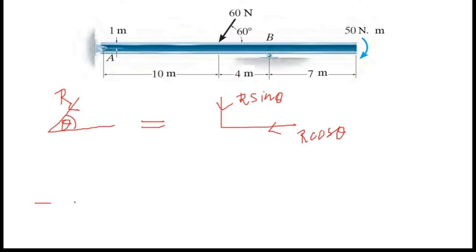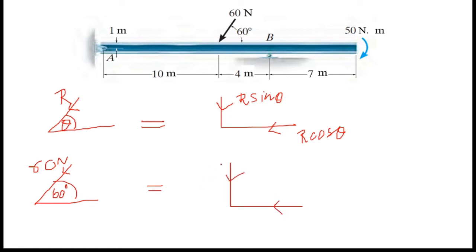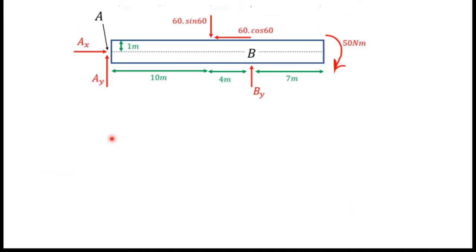Likewise, in our case we have a force of 60 Newtons at an angle of 60 degrees. So now we can write this force as two components: the vertical force is 60 times sine 60 degrees, and the horizontal force is 60 times cos 60 degrees. Now we can find the support reactions.